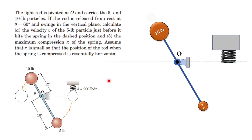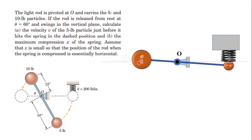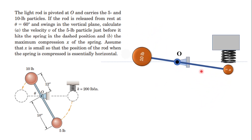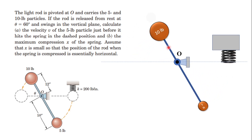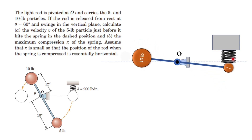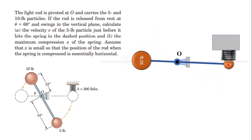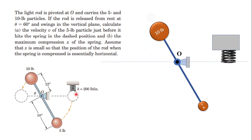In this video we'll see the potential energy principle over the kinetics of a particle system. The system contains two particles at its ends: a 10-pound and a 5-pound particle. The rod is a rigid rod that pivots over a point. When released from rest at this position, it swings and strikes a spring. The equation states the rod is pivoted and indicates 5 and 10-pound particles; the rod is released from rest at theta = 60 degrees and swings in the vertical plane. Calculate the velocity of the 5-pound particle just before it hits the spring in the dashed position.